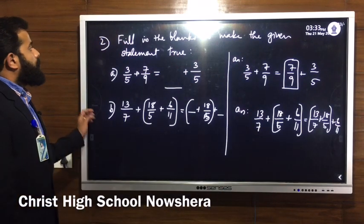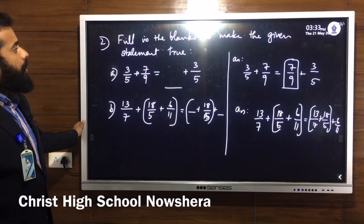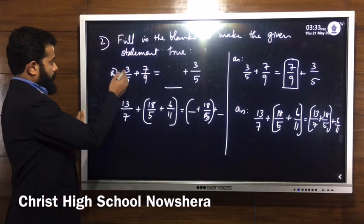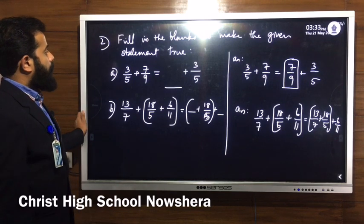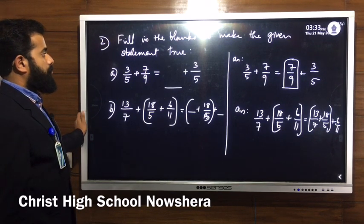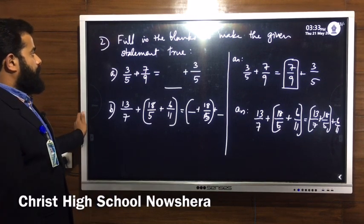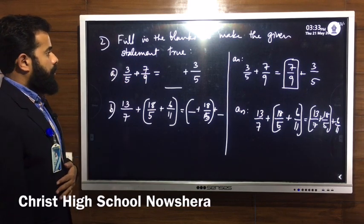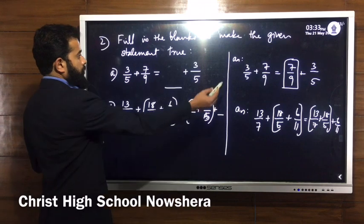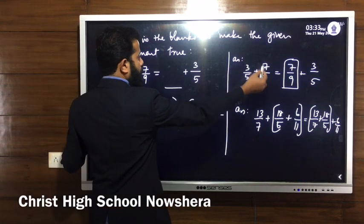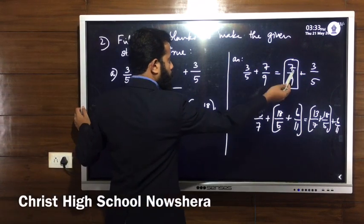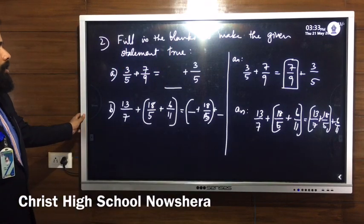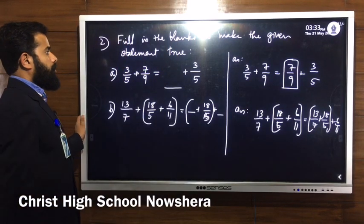Question number 2: fill in the blanks to make the given statements true. First: 3 by 5 plus 7 by 9 equals dash plus 3 by 5. You can compare the terms — it is the commutative property. So 3 by 5 plus 7 by 9 equals 7 by 9 plus 3 by 5, which is the commutative property under addition.